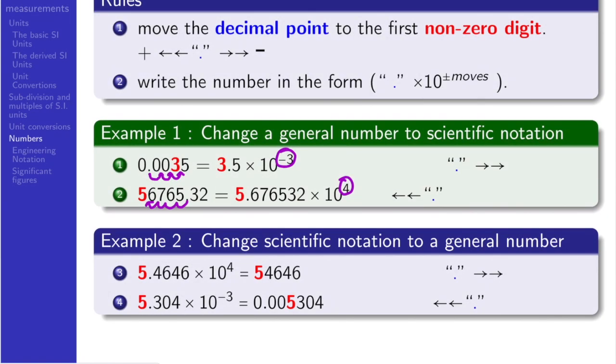In example 2, we've got to change the numbers that are written in scientific notation to a general form where there's no exponents. And to do this, we note that the exponent is 4 in the first example. Therefore, we've got to move to the right 4 times so that we can get 4 minus 4, canceling out 10 to the power 0 is 1. And then the number that results is just 5, 4, 6, 4, 6.